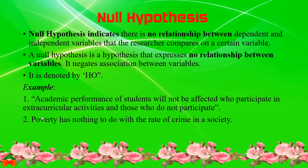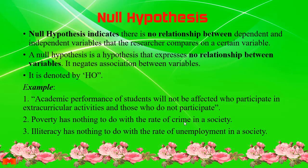Another example of Null Hypothesis: property has nothing to do with the rate of crime in a society — negating the relationship between property and crime. Another example: illiteracy has nothing to do with the rate of unemployment in a society, indicating that illiteracy has no relationship with unemployment.